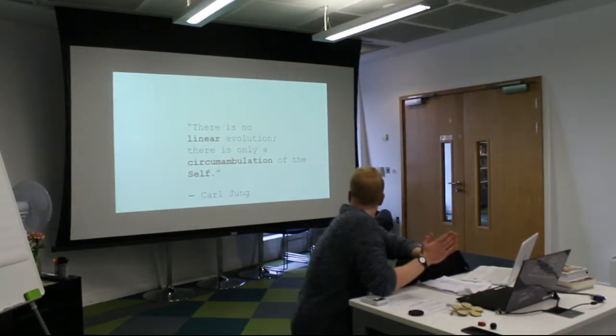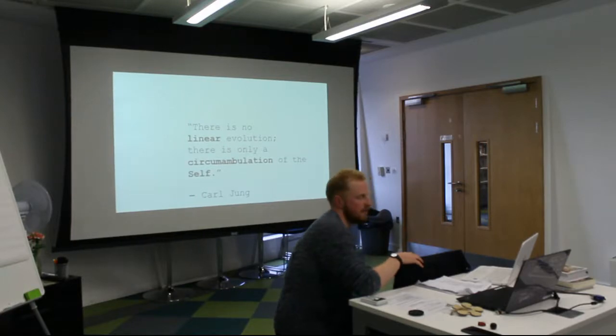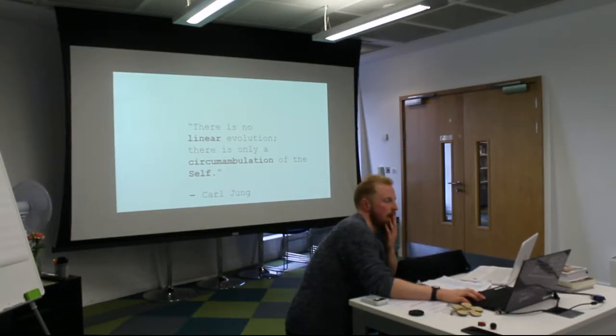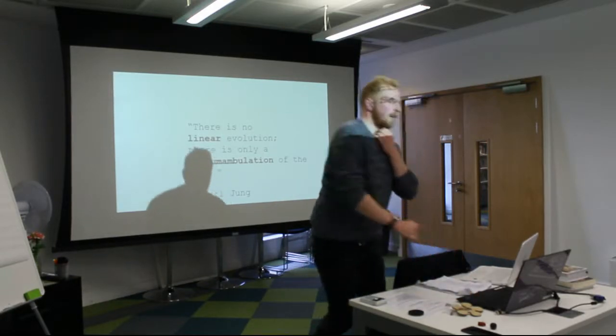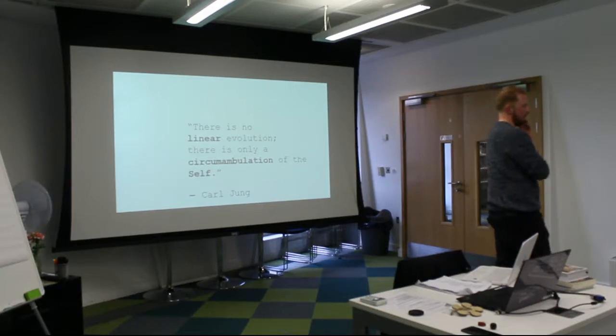So, Jung said, there is no linear evolution. There is only a circumambulation of the self. And that's how we're going to approach alchemy and our understanding of alchemy today.